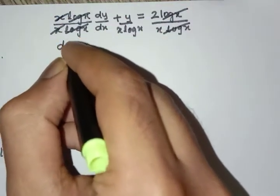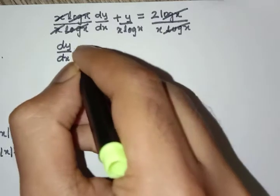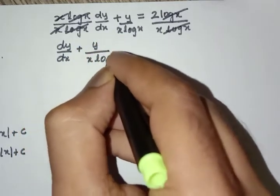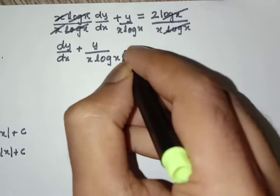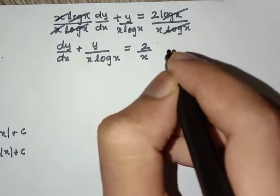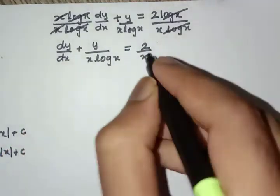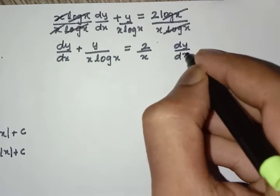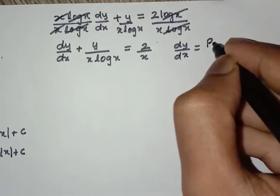So we get dy by dx plus y by x log x is equal to 2 by x. This is of the form dy by dx plus Py is equal to Q.